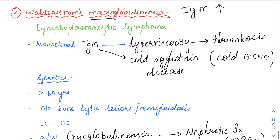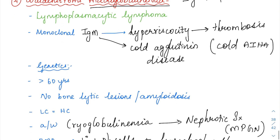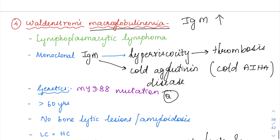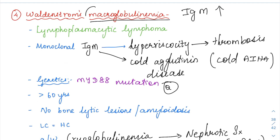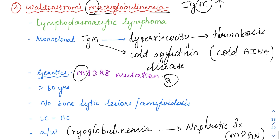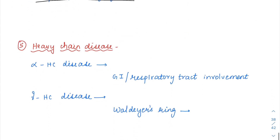The genetics involved in Waldenstrom's macroglobulinemia — important for MCQs — is the MYD88 mutation, which is fairly specific for Waldenstrom's macroglobulinemia. As a memory aid: there's an M in Waldenstrom's macroglobulinemia, IgM is elevated, and MYD88 is the associated mutation.